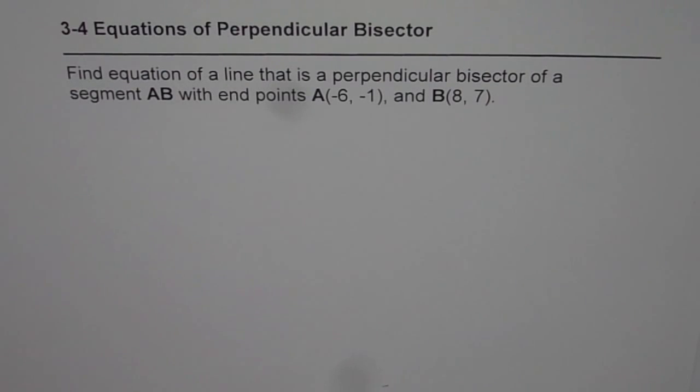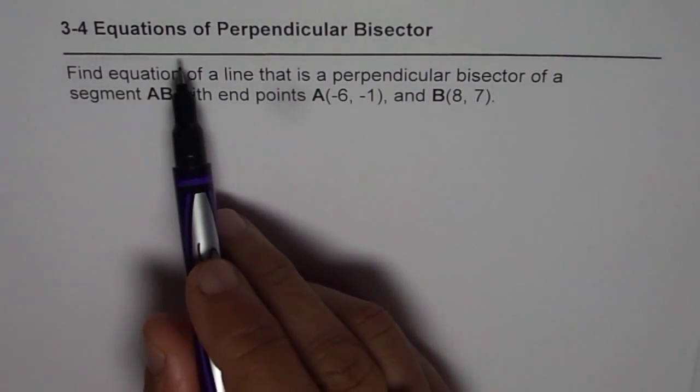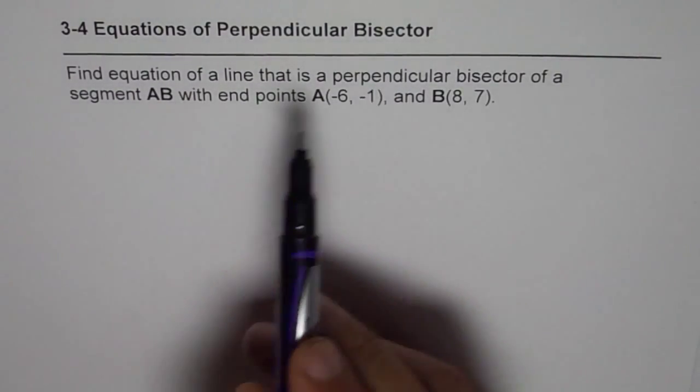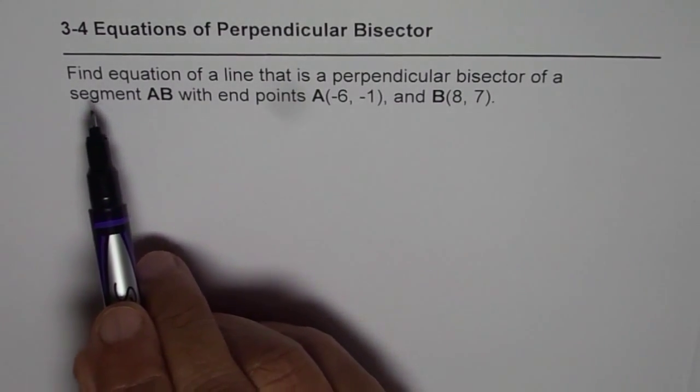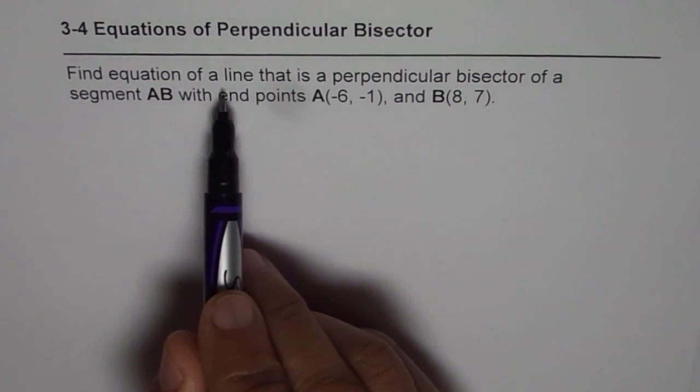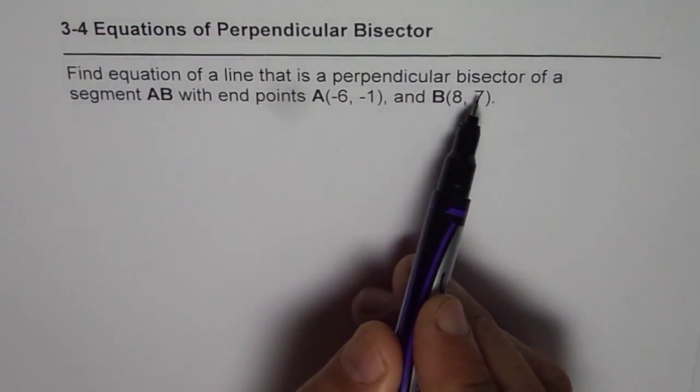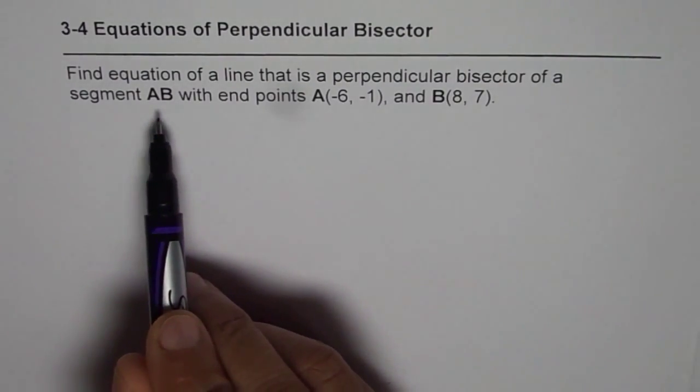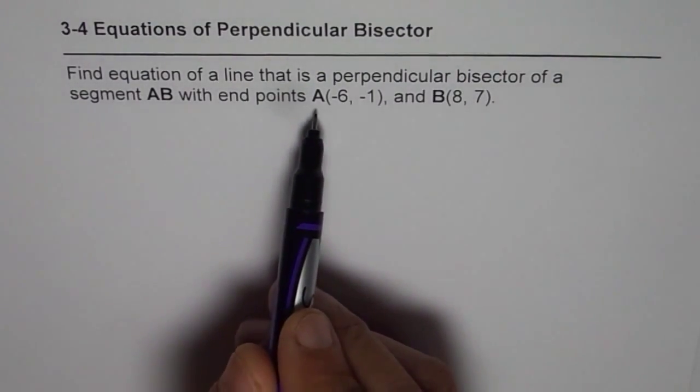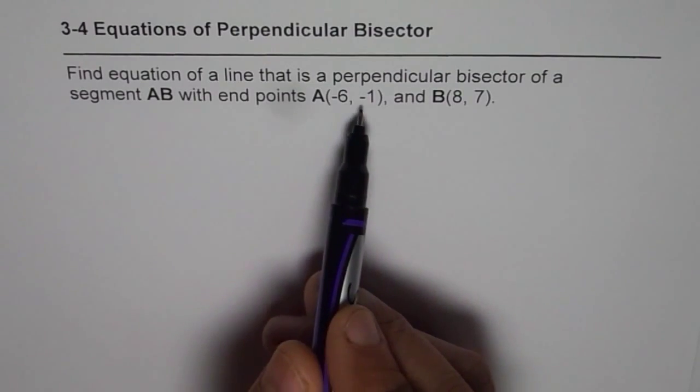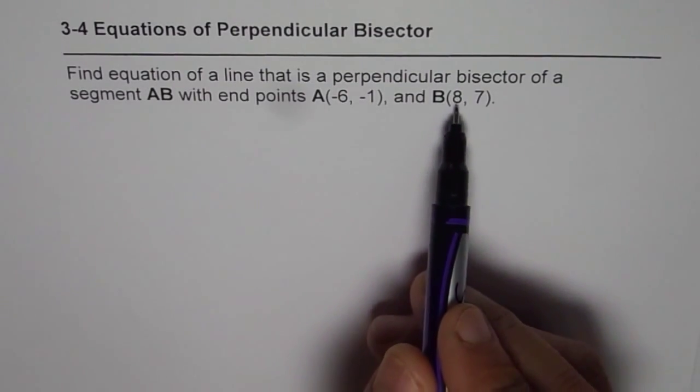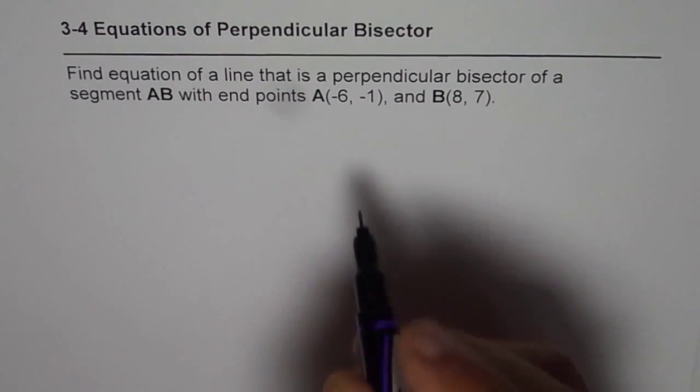I am Anil Kumar and in this video we will summarize all the steps which you should take to find equations of perpendicular bisector. The question here is, find equation of a line that is perpendicular bisector of a segment AB with endpoints given to us, A as (-6, -1) and B as (8, 7).